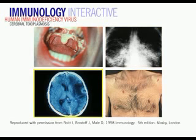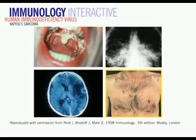Some individuals develop abscesses caused by parasites such as Toxoplasma, which you can see here on a brain scan produced by magnetic resonance imaging. In other cases, individuals can develop a cancer called Kaposi sarcoma, where endothelial cells lining blood vessels become transformed. This appears to be a consequence of uncontrolled infection with a herpes virus, which has the ability of transforming cells to induce uncontrolled malignant replication.